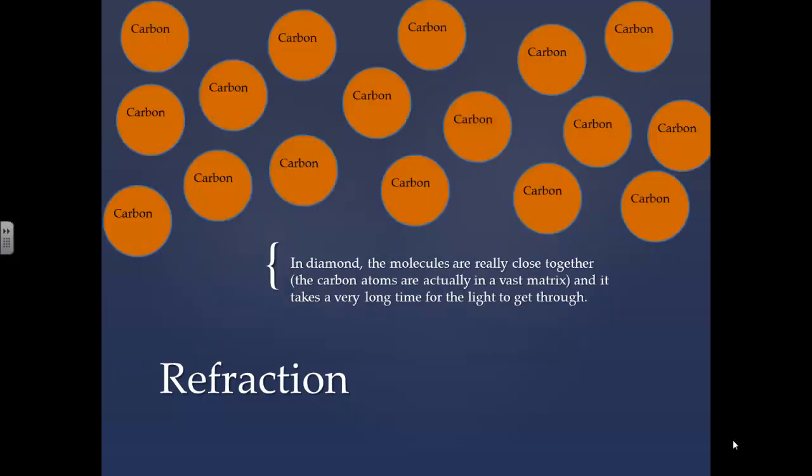In diamond, the molecules are really close together. The carbon atoms are actually in a vast matrix, and it takes a very long time for the light to get through compared to air.